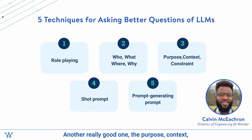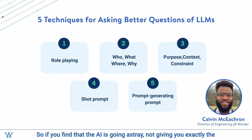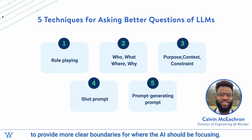Another really good technique is Purpose, Context, Constraint. This is great for getting a more accurate response. If you find that the AI is going astray and not giving you exactly the information that you want, you can use Purpose, Context, Constraint to provide clearer boundaries for where the AI should be focusing.